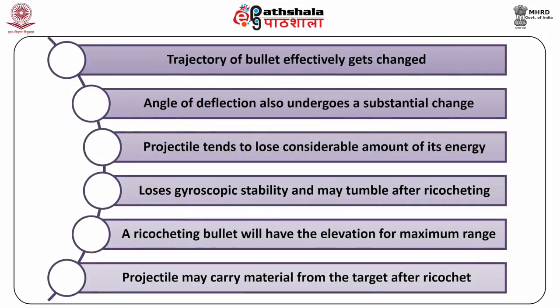The trajectory of the bullet effectively gets changed. Apart from changing the direction of motion, the angle of deflection also undergoes a substantial change. After ricochet, the projectile tends to lose considerable amount of its energy — up to one third of its total energy. It loses gyroscopic stability and may tumble. The range will decrease, which is contrary to the popular belief that a ricocheting bullet will have the elevation for maximum range. The projectile may also carry some material from the surface of the target after ricochet.